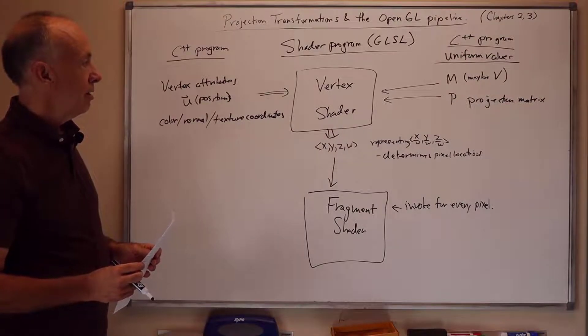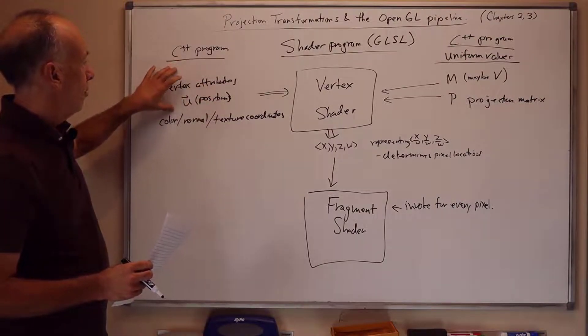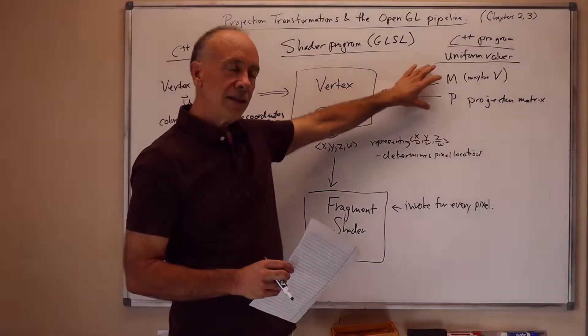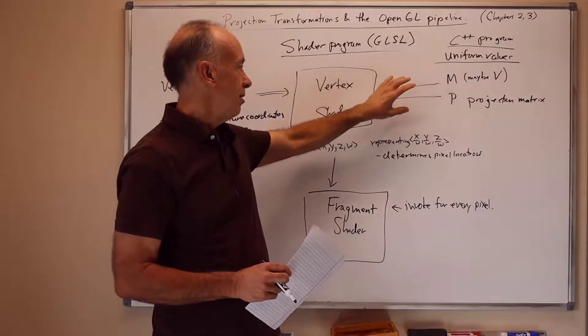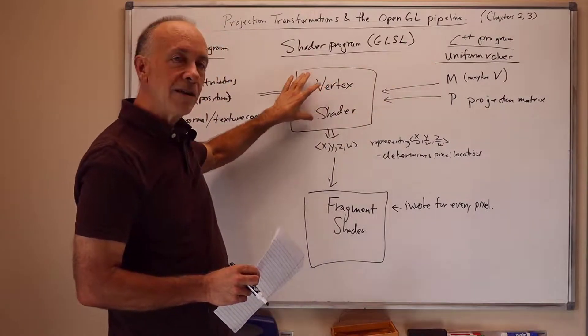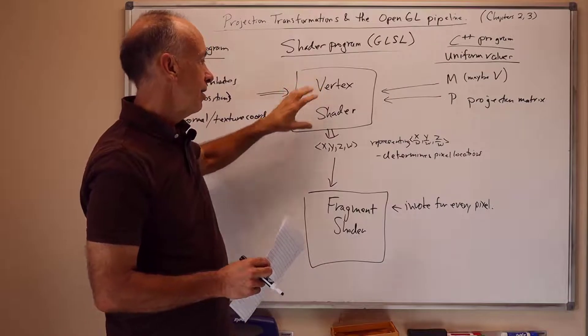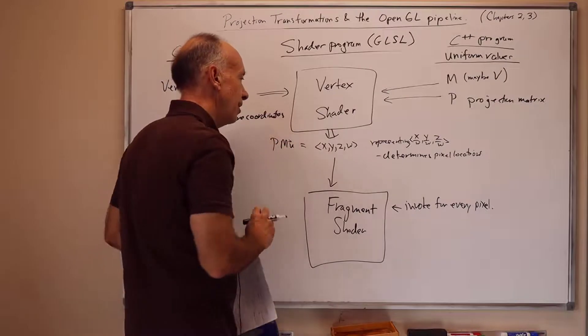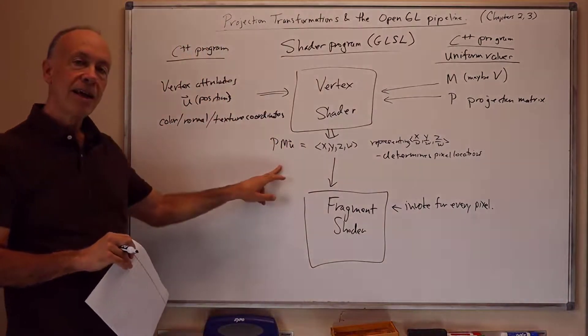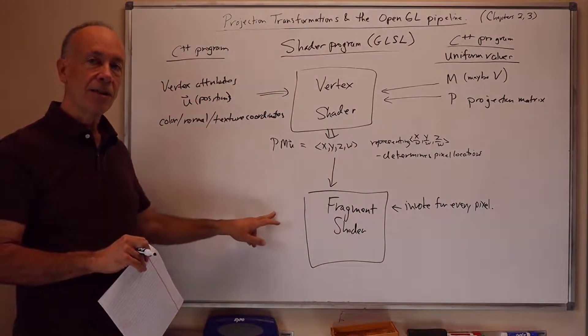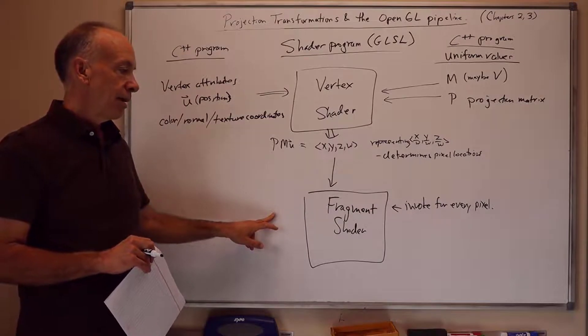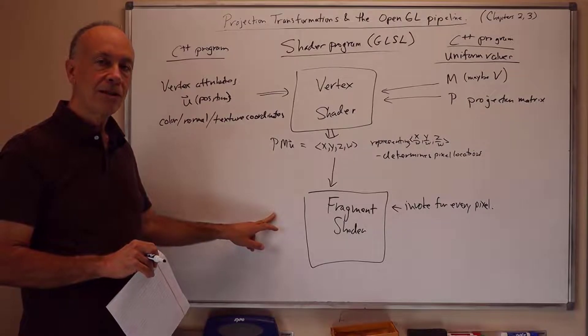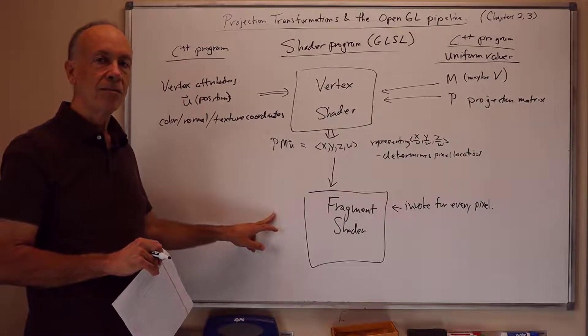And so this is typically what happens. The C++ program creates the vertex attributes such as position. It also creates the model view matrix and the projection matrix. Those are sent to the vertex shader. The vertex shader computes, in this case, since there's only p and m, it'd be p times m times u. And then that determines which pixels need to be processed by the fragment shader. And I will pause here and switch to the computer and show you a very simple use of this in the Solar Modern program.